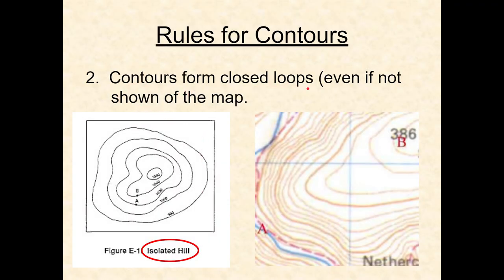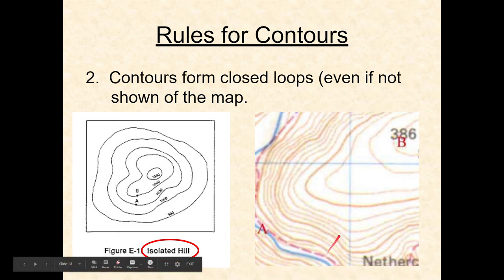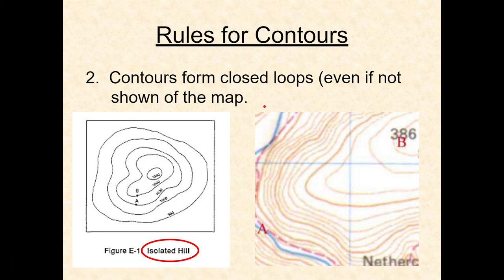Contours form closed loops. You may look at a map where the contours don't go all the way back around on the visible portion, but somewhere off the map they do close. Because we live on continents — if you go up 10 feet in elevation anywhere, that contour line will curl all the way around the continent and come back. So on large enough maps, contours always form a closed loop.